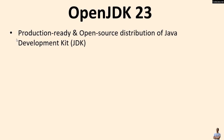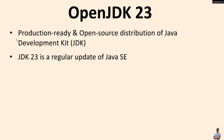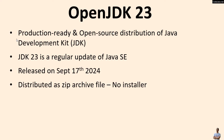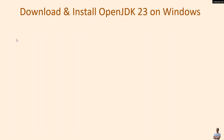First, let's understand briefly about OpenJDK. OpenJDK is a production-ready and open source distribution of Java Development Kit, or JDK. JDK version 23 is just a regular update of the Java SE platform — it was released on September 17th, 2024 — and OpenJDK 23 is distributed as a zip archive with no installer.